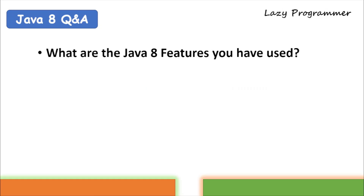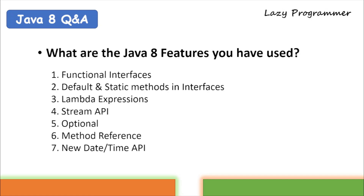Whenever you are in the interview and the interviewer asks you have you worked on Java 8, and if you say yes, then the first question will be: what are the Java 8 features that you have used? You can list the most important features you have worked on — functional interfaces, default and static methods in interfaces, lambda expressions, stream API, optional, method reference, and the new date and time API. Whatever topics you know pretty well, mention them upfront so the interviewer picks questions from those topics.